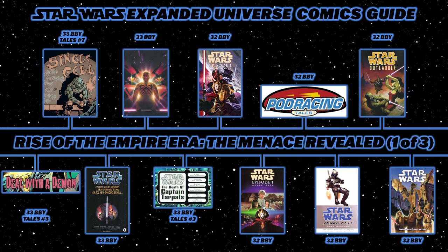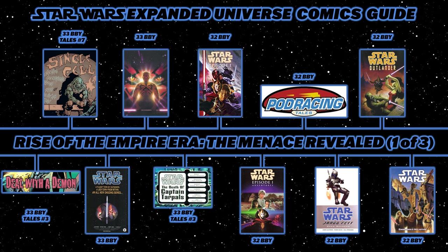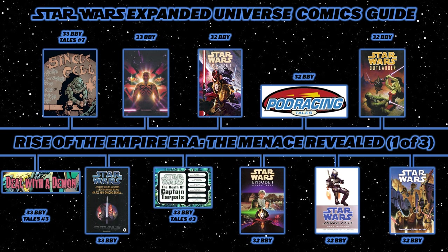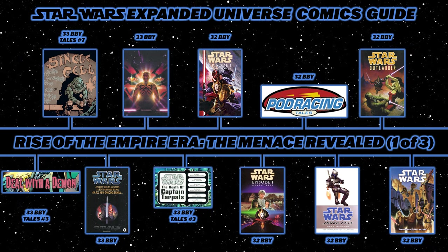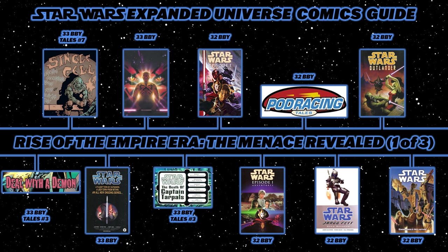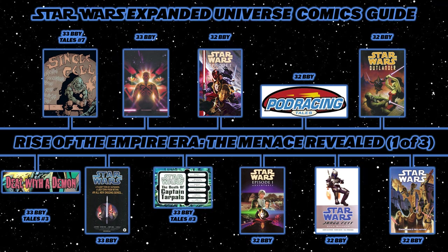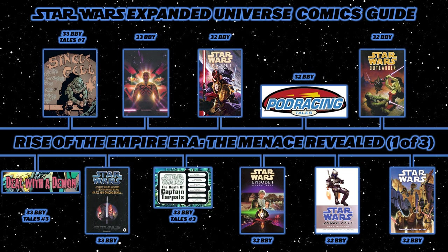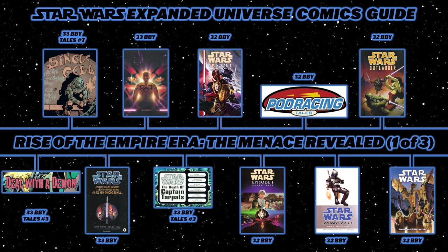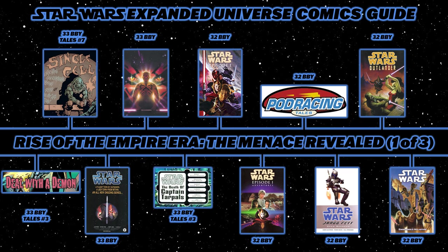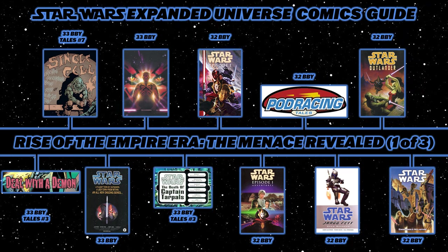Next is the official first arc of Star Wars Republic: Prelude to Rebellion, which sees Ki-Adi-Mundi charged with murder and drawn into a web of conspiracy. After that, read the 2000 Darth Maul miniseries, where Darth Sidious orders Darth Maul to strike down Black Sun. Then back to Star Wars Tales number 3 for The Death of Captain Tarpals.